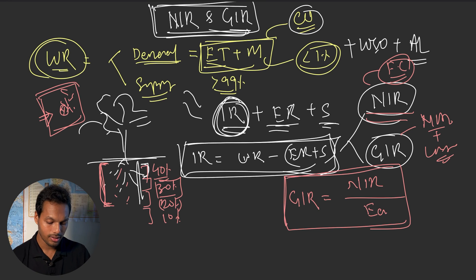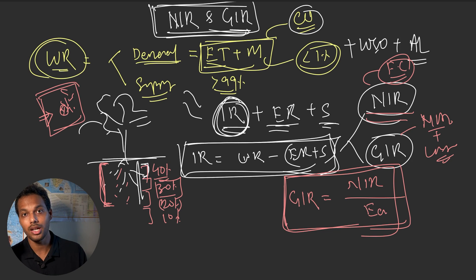Gross irrigation requirement equals net irrigation requirement divided by application efficiency. There are different factors affecting net and gross irrigation requirement: the water requirement itself, the efficiency of the irrigation system, management practices, crop species chosen, cropping system, soil type, and weather factors — all of these affect the water requirement of the crop and consequently the irrigation requirements.